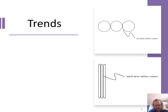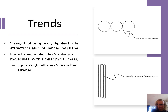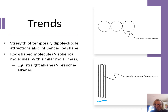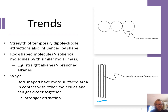Another trend we can see with temporary dipoles is how shape affects things. If you've got molecules more like rods, those shapes allow molecules to get much closer with greater contact between them, which creates greater attractions. Straight chain alkanes, for example, have higher melting and boiling points than those with branches, because the branched ones are more like spheres with much less surface contact and therefore weaker attractions.